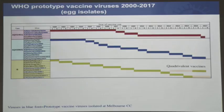This slide — the top is H1N1, the middle is H3N2, and the bottom is flu B — shows time from 2000 to 2017 for both Southern and Northern Hemispheres, to show how often we've changed the vaccine recommendation. We do change the vaccine strains for each of the four components fairly often, but never have all four strains been changed at the same time.